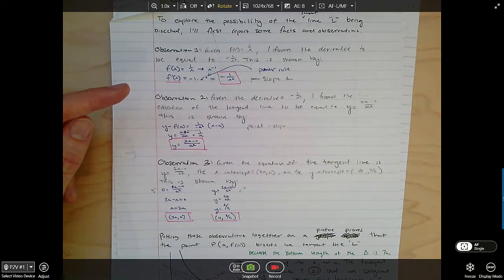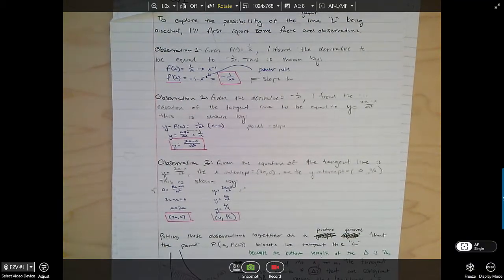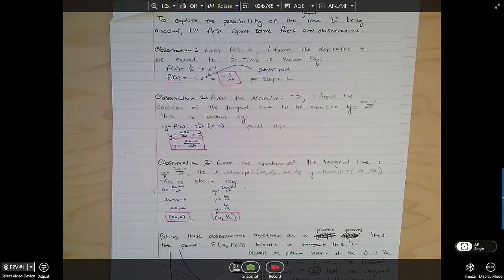They're making an observation that the derivative of 1 over x is negative 1 over x squared. In a certain sense that's an observation, but that's kind of a standard technique that we use all the time. It's not an observation in the sense that I'd intended. The sense that I'd intended is it's an observation that wouldn't necessarily be obvious to your mathematical peers.